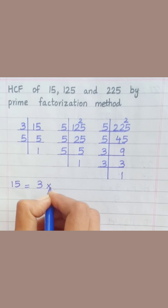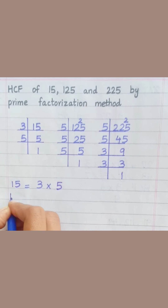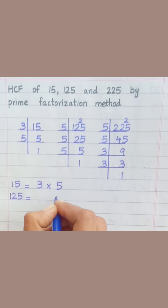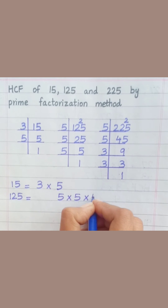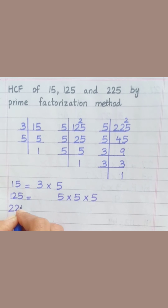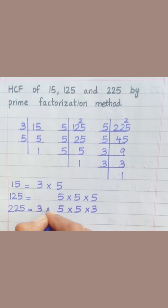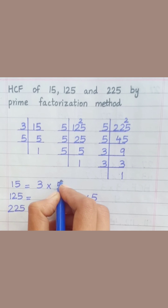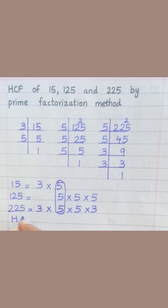So: 15 = 3 × 5; 125 = 5 × 5 × 5; 225 = 5 × 5 × 3 × 3. Now loop through the factors that are common to all of the given numbers. HCF = 5.